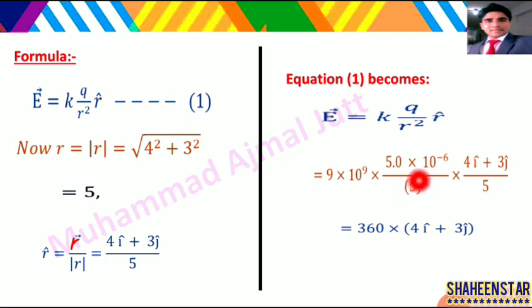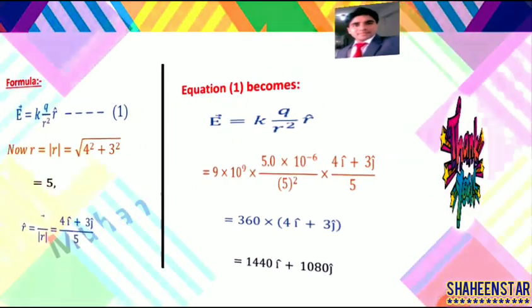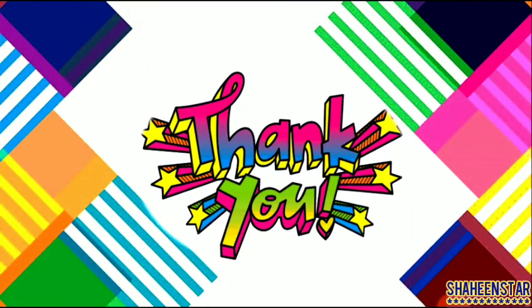Is ko substitute kar ke solve kiya to 360 aaya — isse 4i aur 3j ke saath alag alag multiply karna hoga. To final result hamare paas aata hai: E = 1440i + 1080j N/C. Yeh hamare paas result tha. I hope ke aap ko numerical samajh aa gaya hoga, thank you so much.